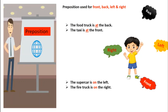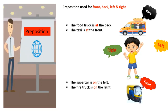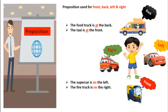Prepositions used for front, back, left, and right. For front and back, we use the preposition 'at'. Like, the food truck is at the back and the taxi is at the front. For left and right, we use the preposition 'on'. Like, the supercar is on the left and the fire truck is on the right.